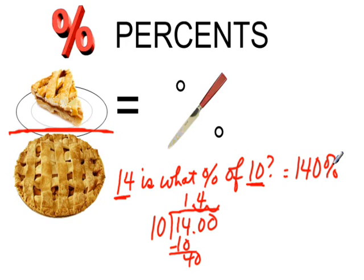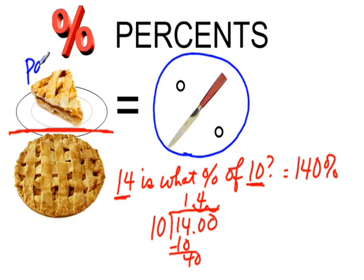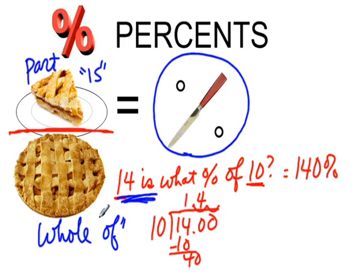And so, to find the percent of a number, the percent, we simply divide the part by the whole. Or what some people say, the is, because this is the is number, divided by the of number, the of number. Is divided by of gives you the percent.